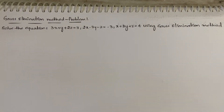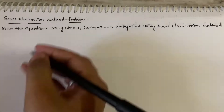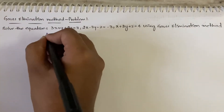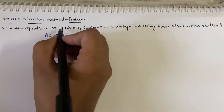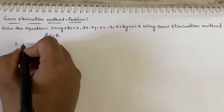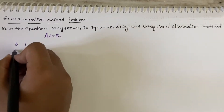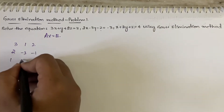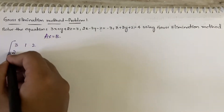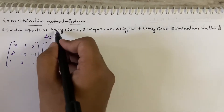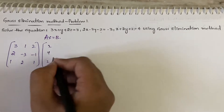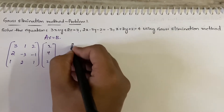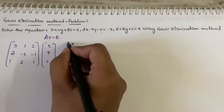Gauss elimination method is very simple — for this you need echelon form only. I'll explain you step by step without going into theory. First, express it in the form of Ax = b. So A is the coefficient matrix: [3, 1, 2; 2, -3, -1; 1, 2, 1], x is the variable matrix [x, y, z], and b is the constant matrix [3, -3, 4].